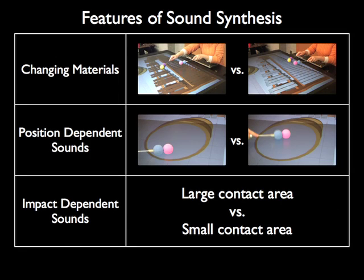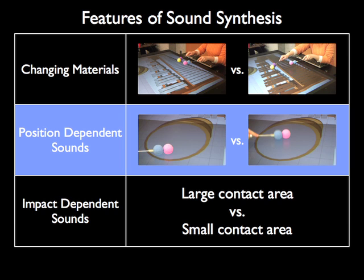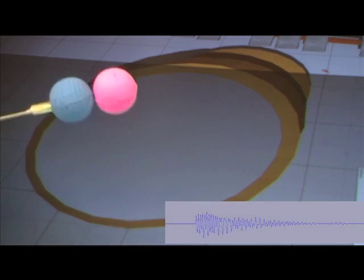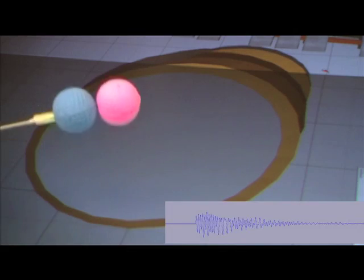In addition, the automatically generated sounds match user interactions more closely. For example, the synthesized sound is different when the instrument is hit at different positions. When the drum is hit on the side, it sounds like this. When it's hit in the middle, it sounds like this.